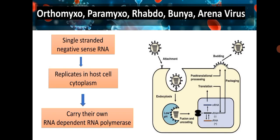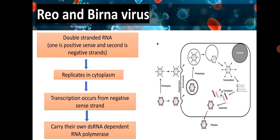In orthomixo, paramixo, rhabdo, bunya, and arena viruses, the single-stranded negative-stranded RNA replicates in the host cell cytoplasm and these viruses carry their own RNA-dependent RNA polymerase. In reo and birna viruses, the genome is double-stranded RNA — one positive sense strand and one negative strand — they replicate in the cytoplasm. Transcription occurs from the negative sense strand, and they carry their own double-stranded RNA-dependent RNA polymerase.